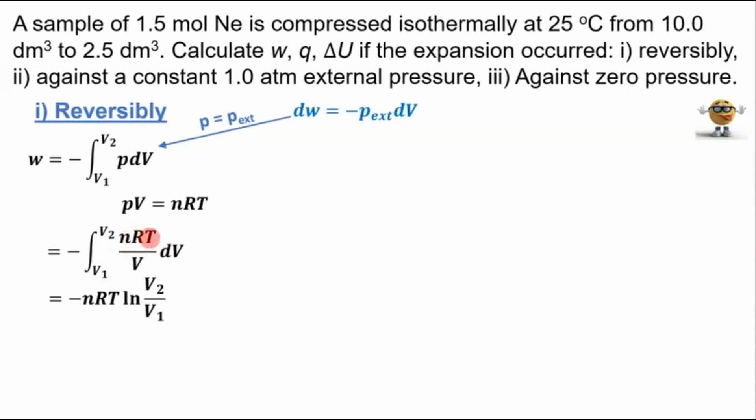And n, R, and T are all constants, so they get yanked out of the integral, and the integral of 1 over V is ln V. We're going from V2 to V1, so after simplifying and doing a log law, we have negative nRT ln V2 over V1.